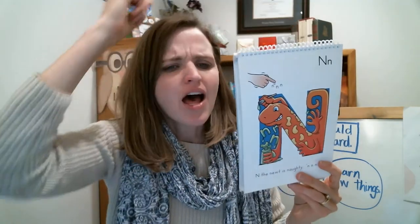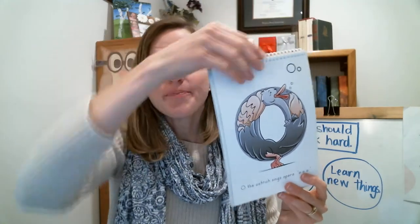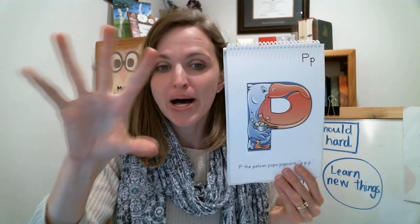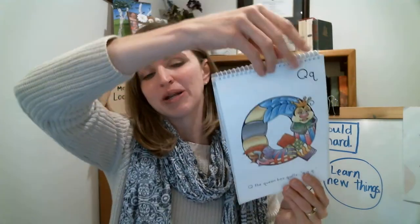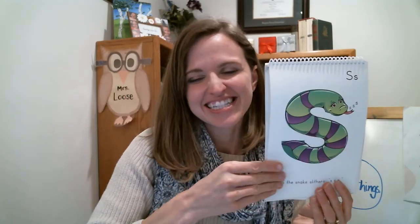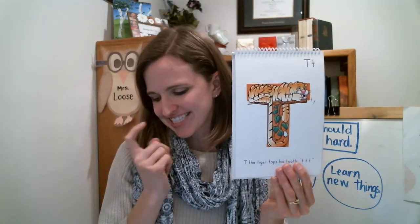M the moose munches. N the newt is naughty — N n n n. O the ostrich sings opera — ah ah ah. P the pelican pops — P p p p. Q the queen bee quilts — qu qu qu qu. R the rhino races — R r r r r. S the snake slithers — S s s s. And T the tiger taps his tooth — T t t t.